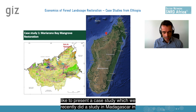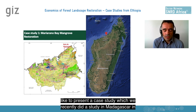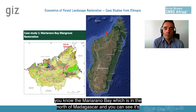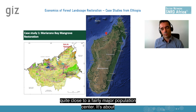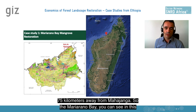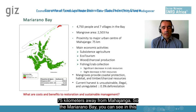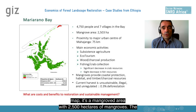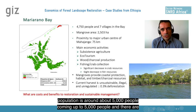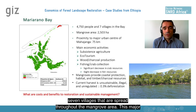I'd like to present a case study we recently conducted in Madagascar in the Mariorano Bay, which is in the north of Madagascar. It's quite close to a fairly major population center — about 75 kilometers away from Mahajanga. The Mariorano Bay is a mangrove area with 2,500 hectares of mangroves. The population is around 5,000 people, and there are seven villages spread throughout the mangrove area.